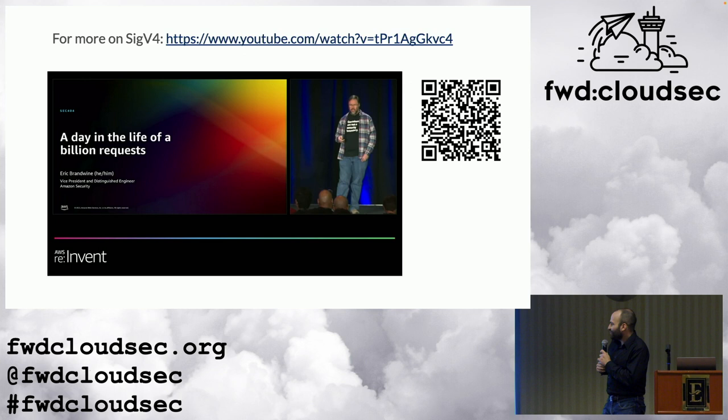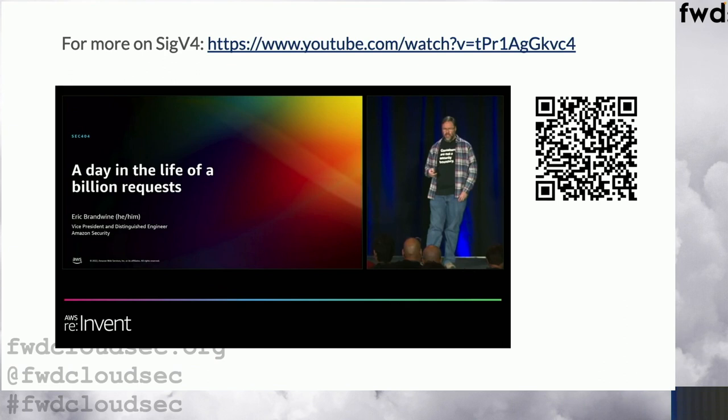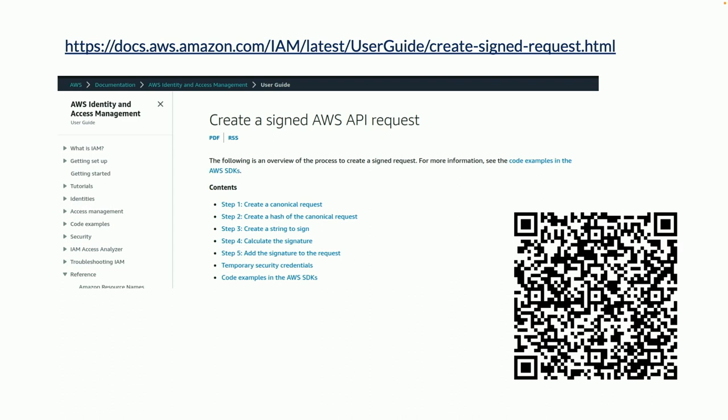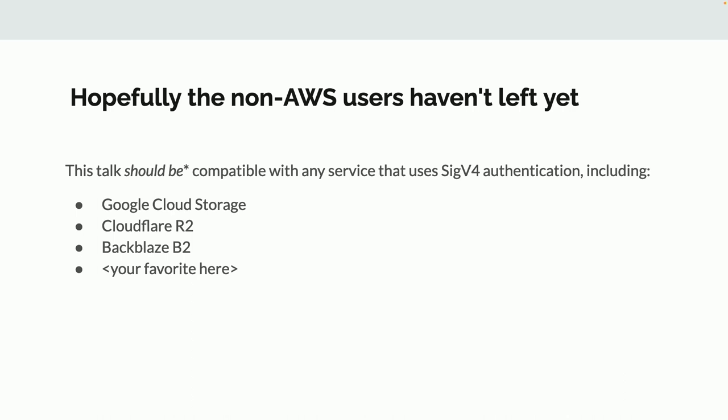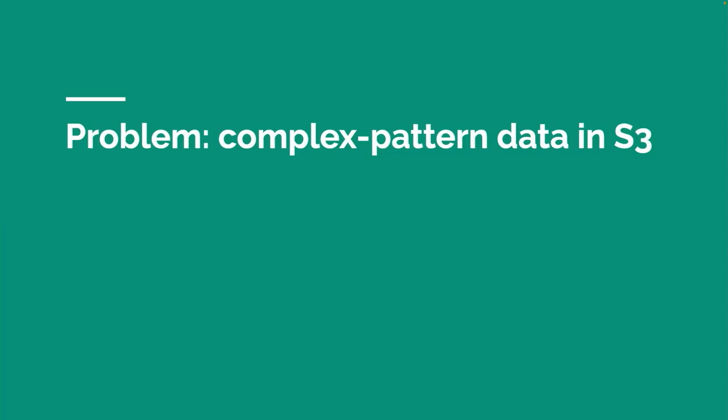For the correct version of this, go watch Eric Brandwein's talk — it discusses cool security measures that ensure regions are isolated. You can also read the docs, or read your favorite AWS SDK source code. For non-AWS users: many cloud object stores use the same SigV4 authentication because they're emulating AWS's approach, so you can probably apply some of the same ideas in this talk to whatever cloud you're using.